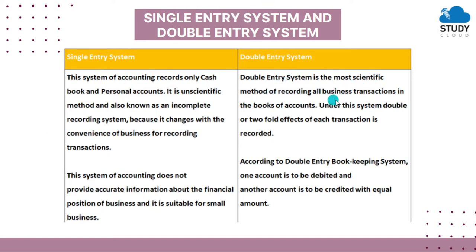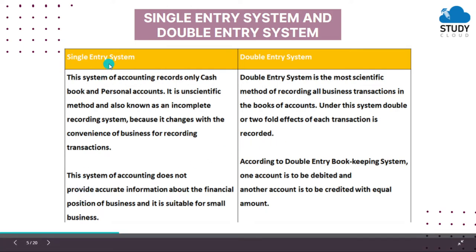Double entry system is the most scientific method of recording all business transactions in the books of accounts. Under this system, the double or two-fold effects of each transaction are recorded. In accountancy or bookkeeping, every transaction has two effects — some go to the debit side and one goes to the credit side depending on their nature. All the rules of accountancy are used in the double entry system.